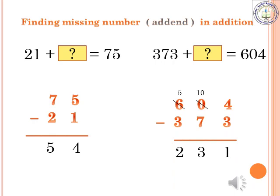Second example: 373 plus dash equals 604. The second number is missing. We can use subtraction: 604 minus 373. Arrange the numbers and start from the ones place: 4 minus 3 is 1. In the tens place, 0 minus 7 — we can't subtract, so we borrow from the hundreds place. The 6 becomes 5, and the tens place becomes 10. 10 minus 7 is 3. In the hundreds place: 5 minus 3 is 2. So the answer is 231.